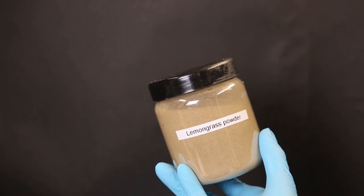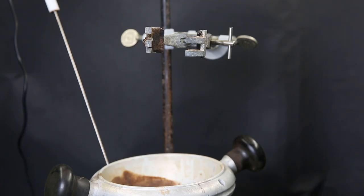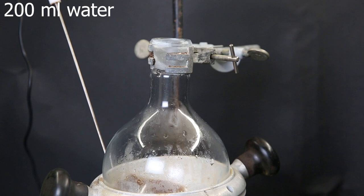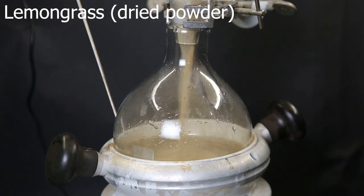So to get started, I bought dry lemongrass powder online, so the volume of lemongrass wouldn't be too much. But the same process can also be done on dried or undried lemongrass. So I set up a heating mantle and then place in a large flask. I then add in 200 mils of water, put on a funnel, and add in 175 grams of lemongrass powder.